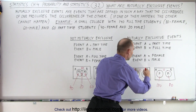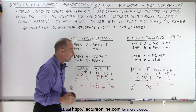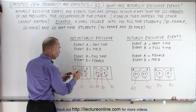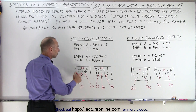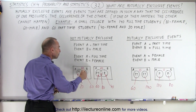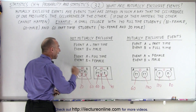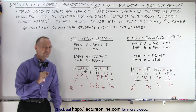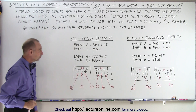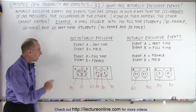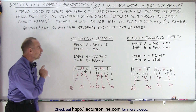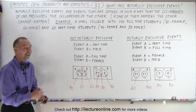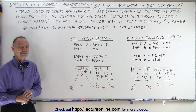So you can see that in the cases with no overlap, we have mutually exclusive events — you cannot be both at the same time. In the cases where there is overlap, there are not mutually exclusive events because you can be both events at the same time. And that's the difference between mutually exclusive events and not mutually exclusive events. And that is how it's done.